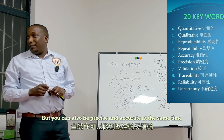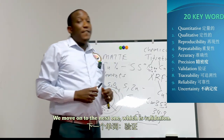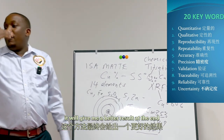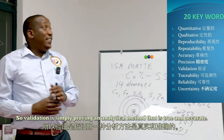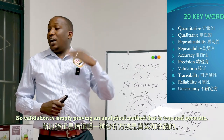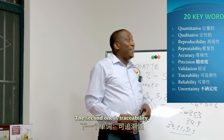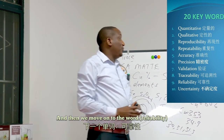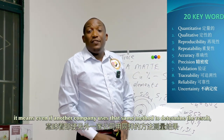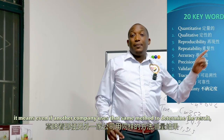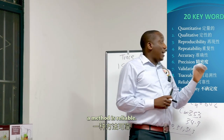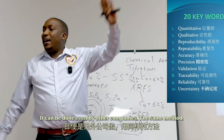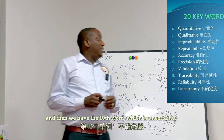We move on to validation. When you validate a method it means you have proven that this method gives a better result. Validation is simply proving an analytical method is true and accurate. The next is traceability — to find the root or origin where something is coming from. Then reliability: if a method is reliable, even if another company uses that same method, it should give the same result. A reliable method can be done a second time and still give a good result.